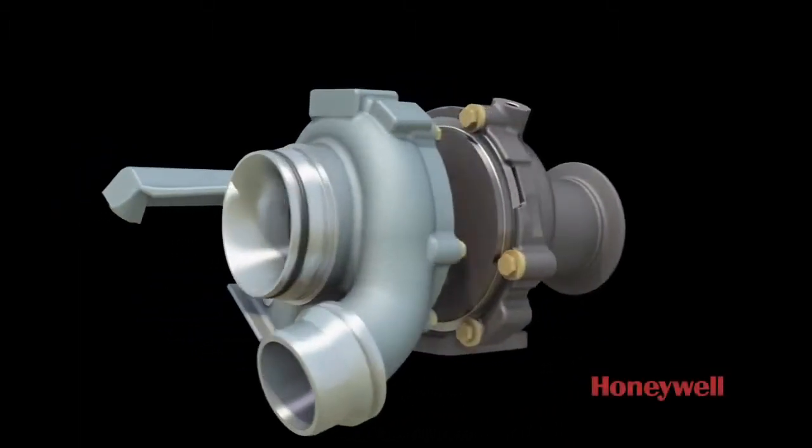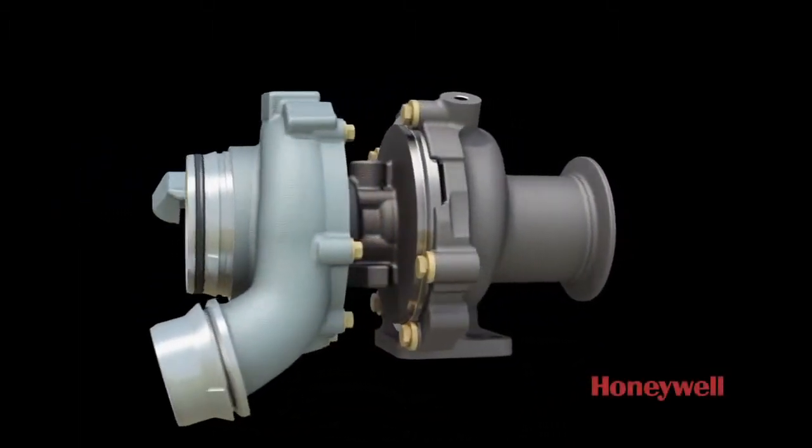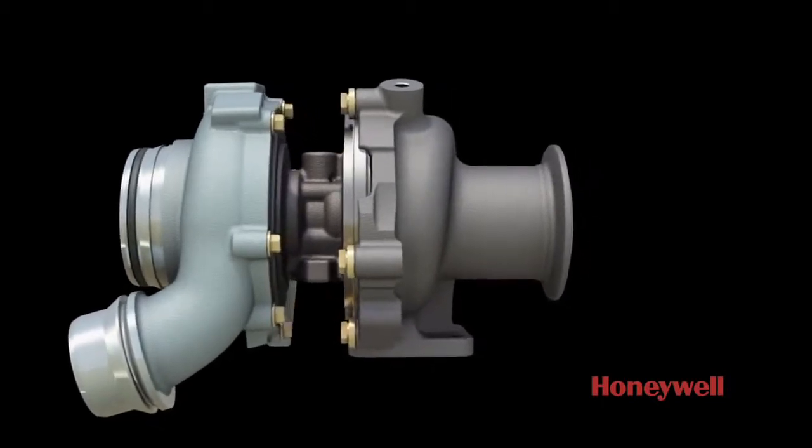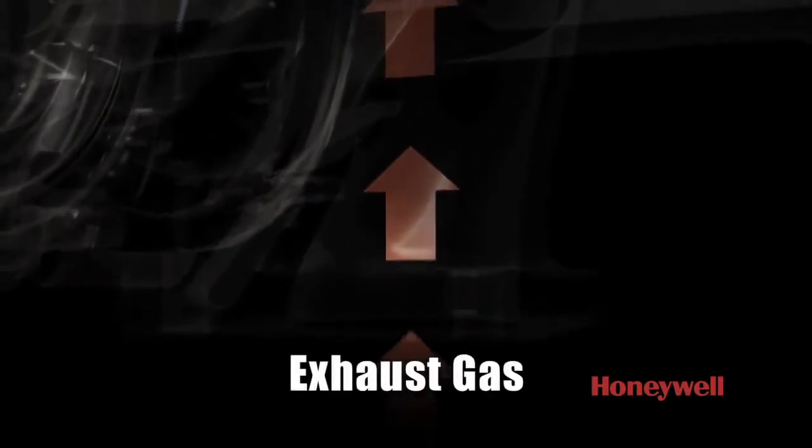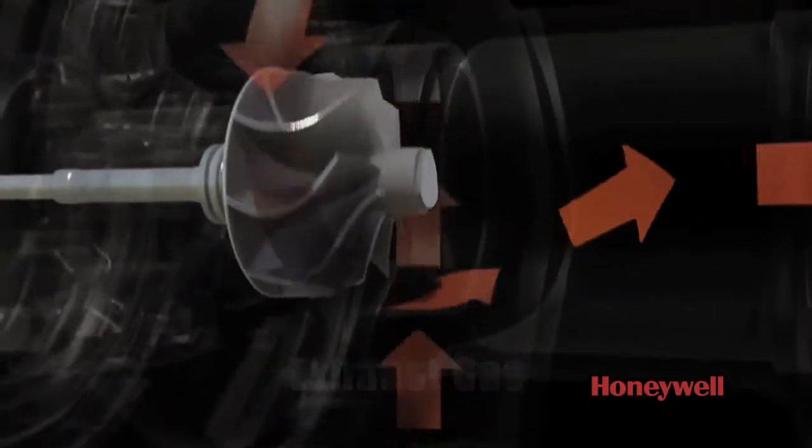To get more air into the engine, a turbocharging system starts with an engine's exhaust gas, power that is essentially wasted in non-turbo engines. This exhaust gas is channeled to the turbo, where it spins a turbine wheel.